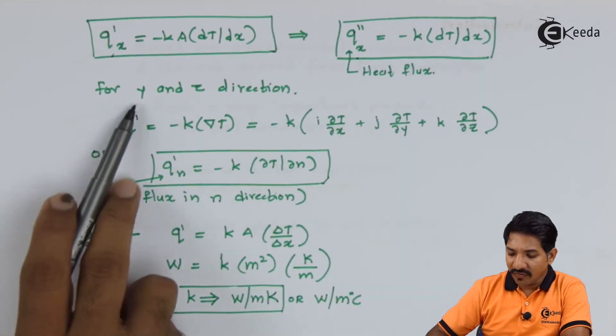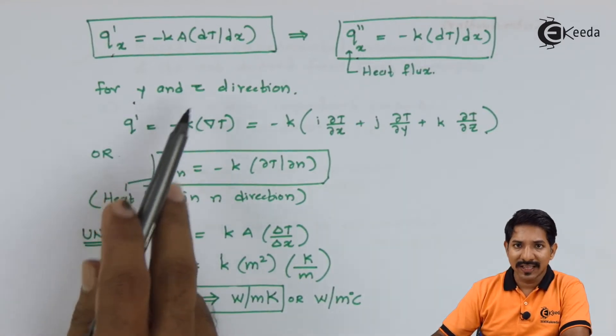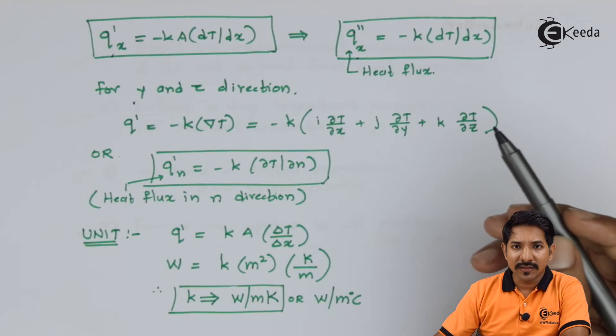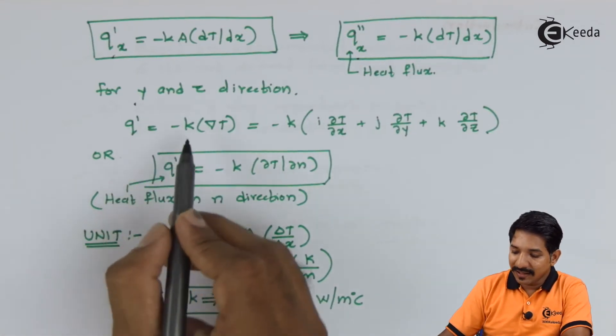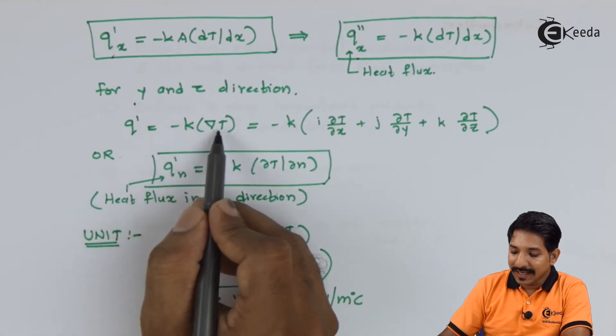Now this was the equation given for x direction. Similarly I can write for y and z direction also. Now if I want to combine the x, y and z direction equation then I can say that Q''x equal to minus K del T.